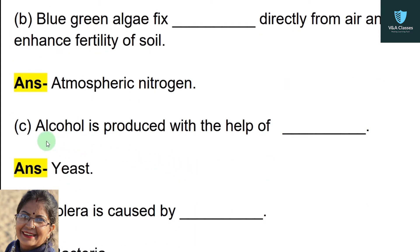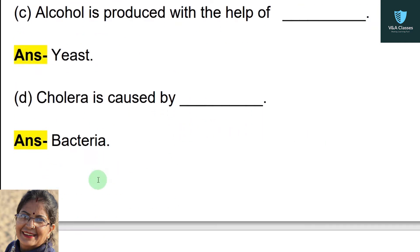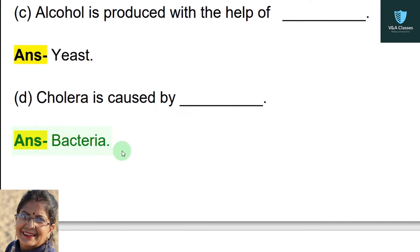Next fill in the blank: alcohol is produced with the help of blank. Answer will be yeast. Next fill in the blank: cholera is caused by blank. Answer will be bacteria.